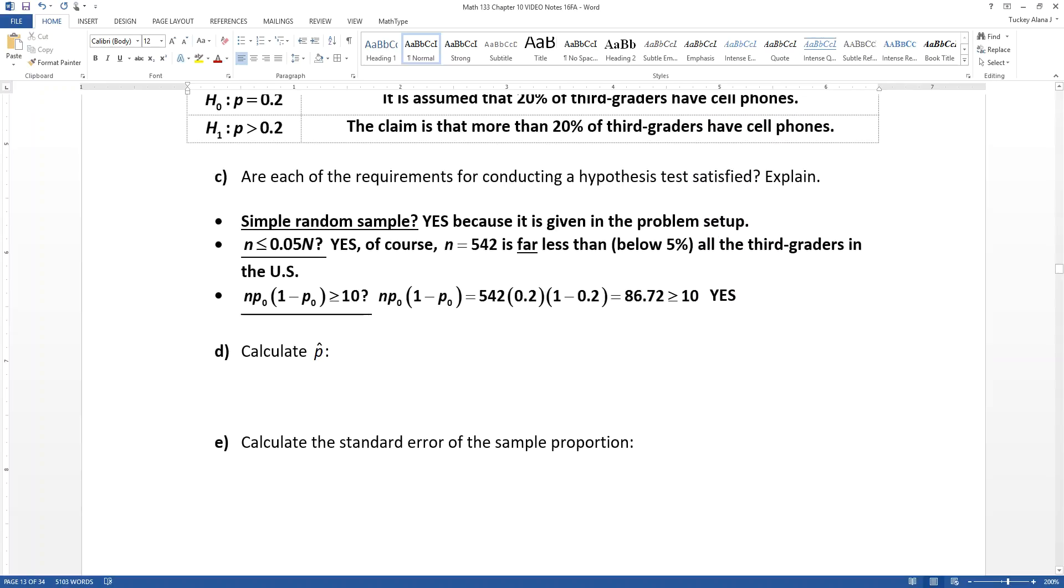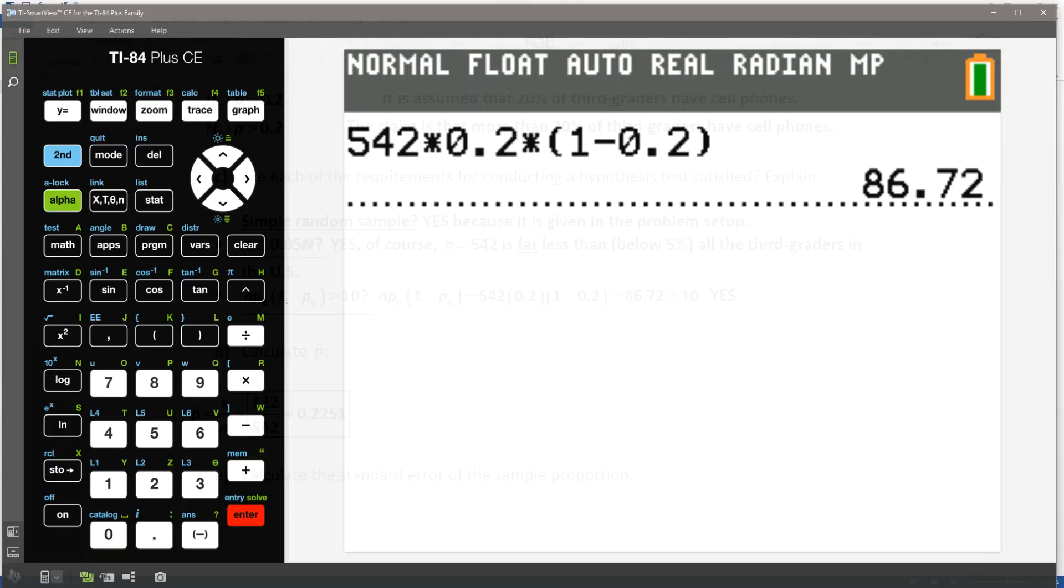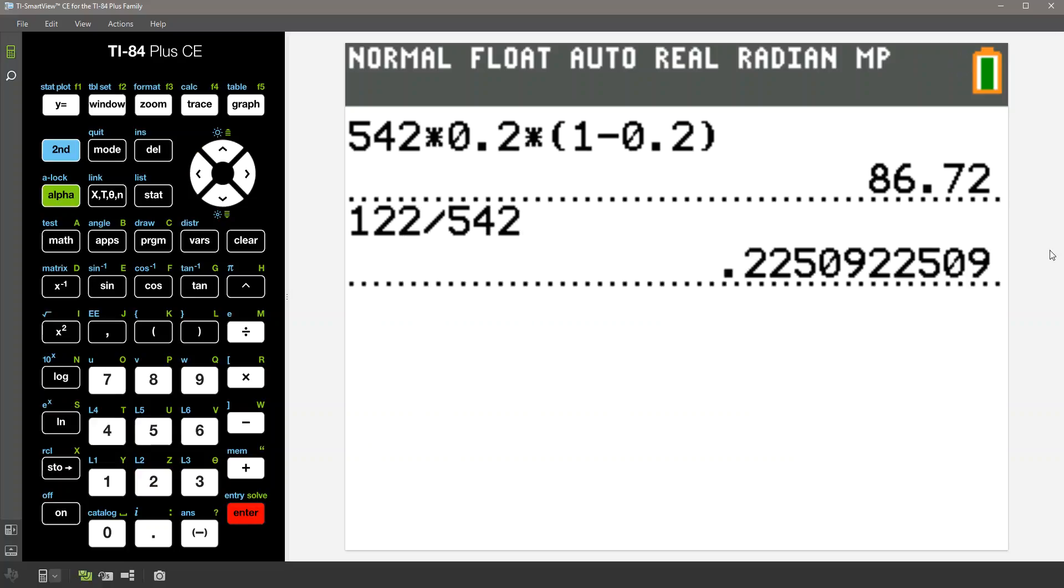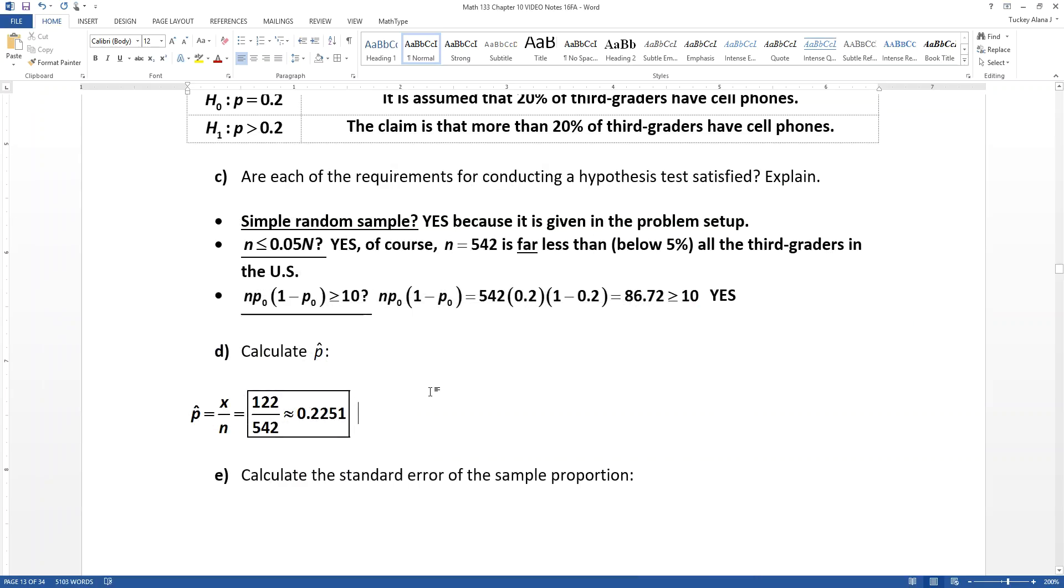Now we're going to calculate P hat. Well, P hat is the same P hat you learned about in chapter 6, section 2, section 6.2, the binomial distribution. X is the number of successes. N is the sample size. So you take 122, you divide it by 542, and you get 0.2251. So that would be your P hat.